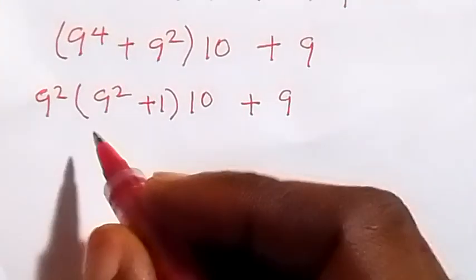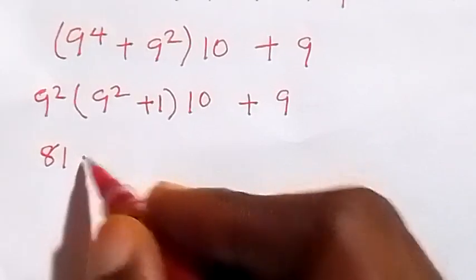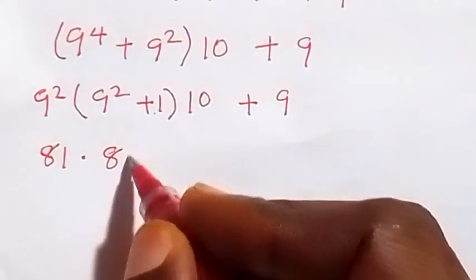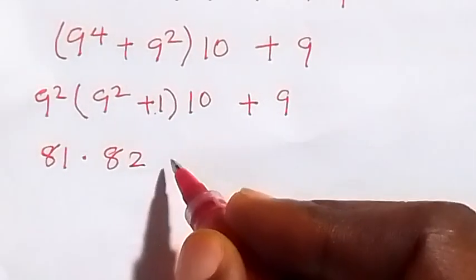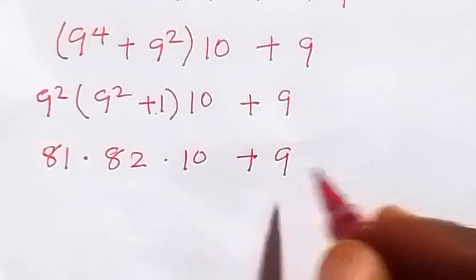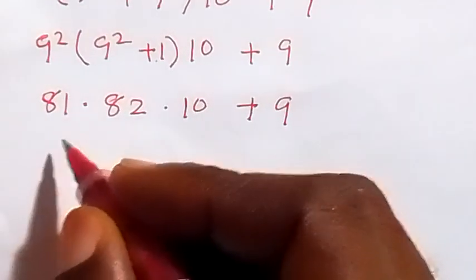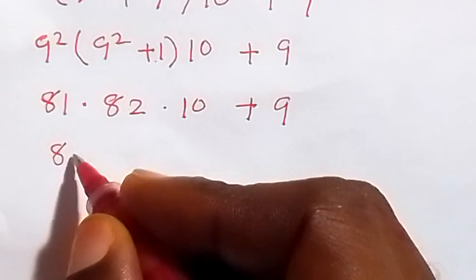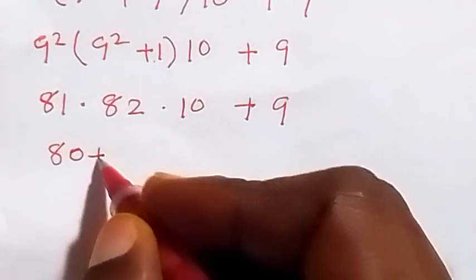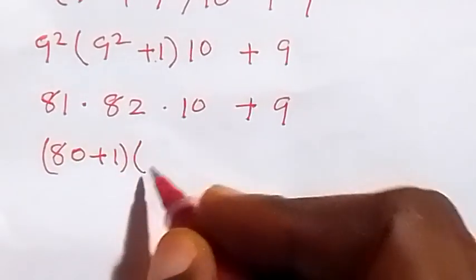9 squared is 81, so we have 81 multiplied by 81 plus 1, that's 82, then multiplied by 10, plus 9. In the next step we can write 81 as 80 plus 1, then multiplied by 82, which can be written as 80 plus 2, then times 10, plus 9.